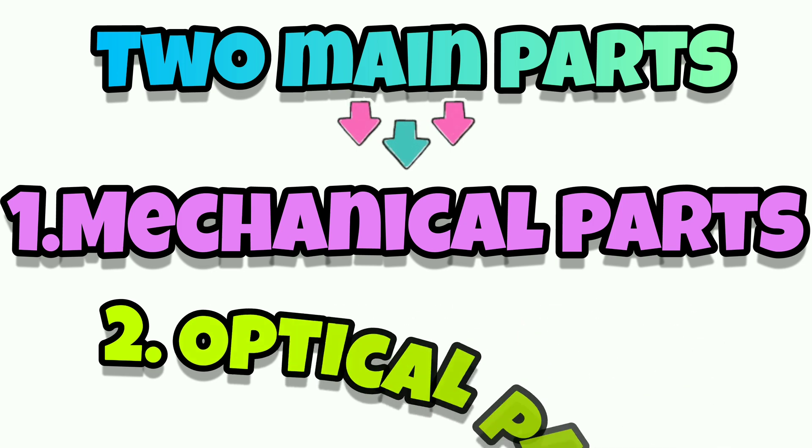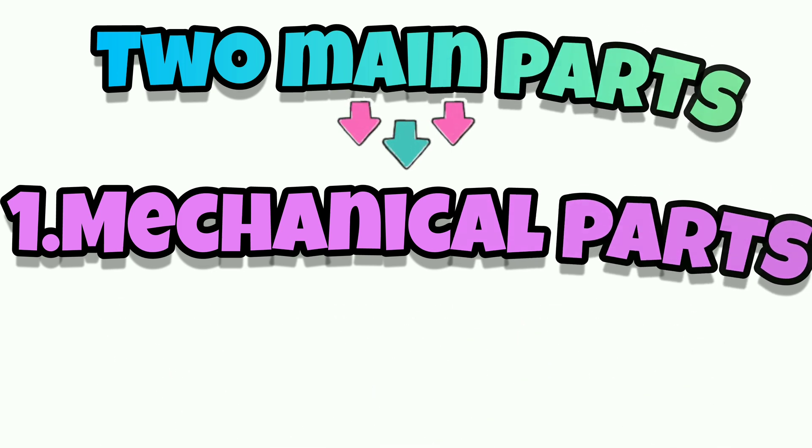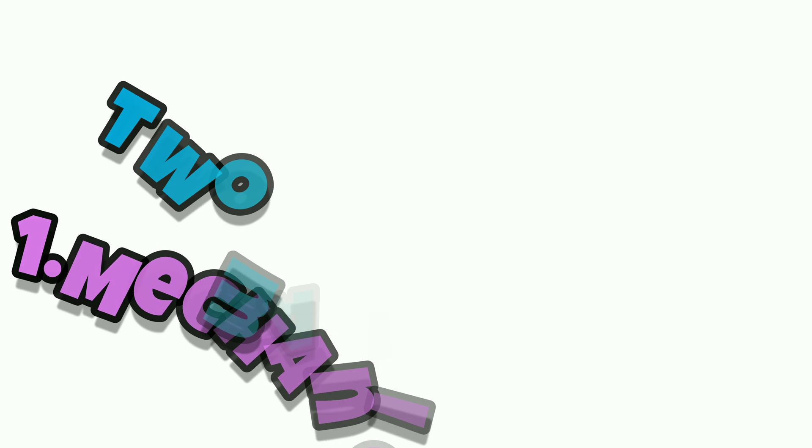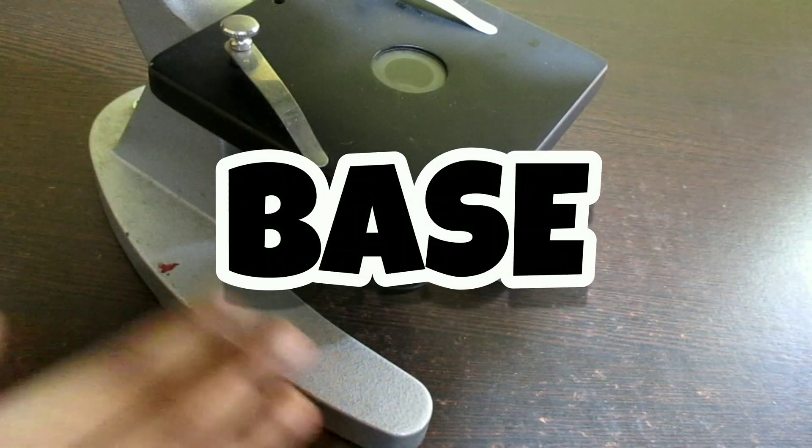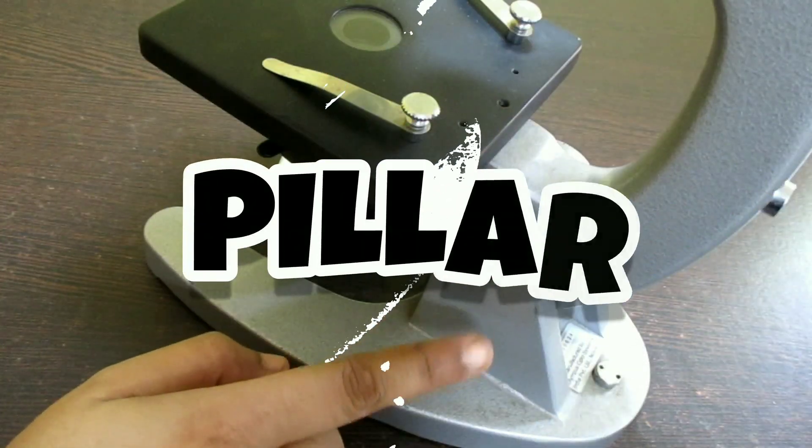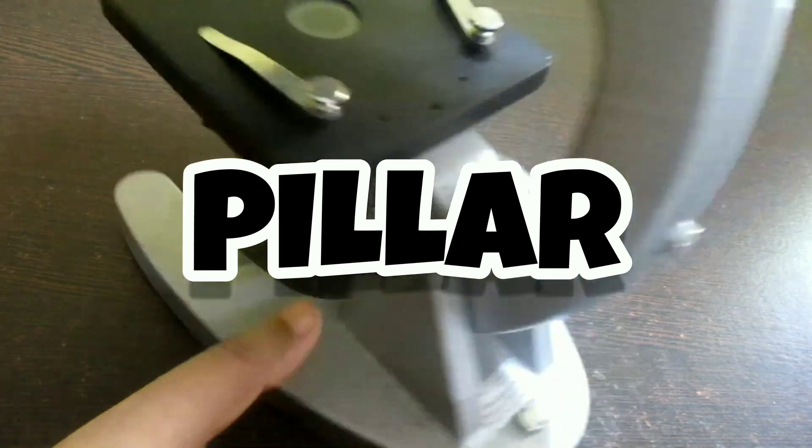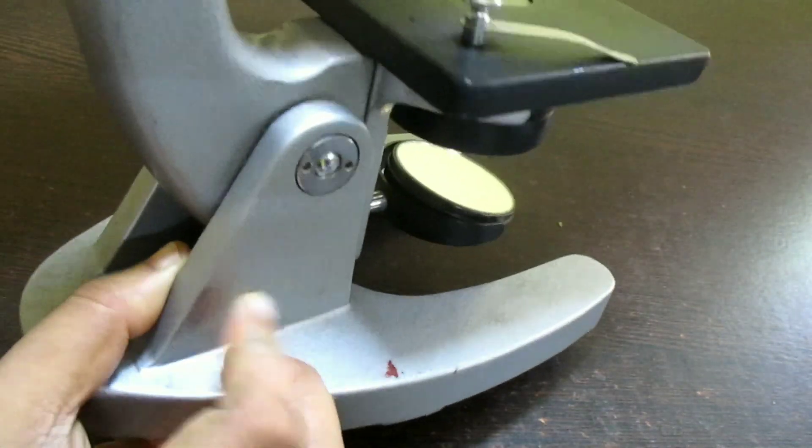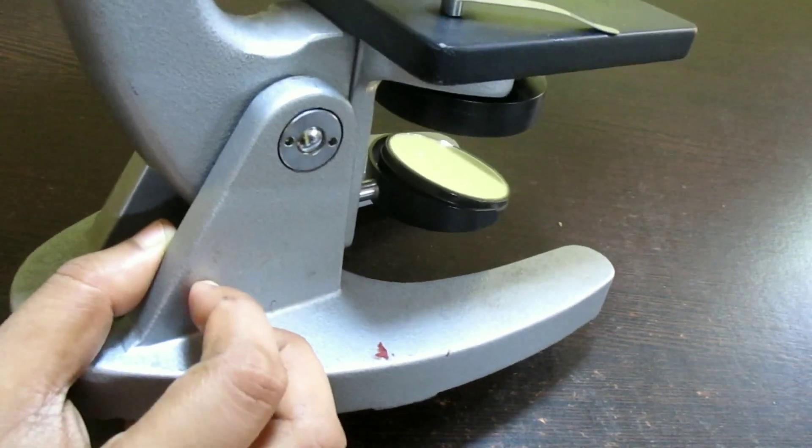Mechanical parts of the compound microscope consists of the following parts. The first one is the base. This is the lowest part of the instrument and is made up of metal. It looks like V or U of English alphabet. Next we find the pillar, this vertically placed column shaped part on the base is known as pillar.